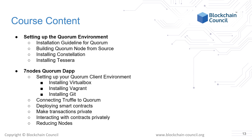Lastly, we will discuss a small project on seven nodes. In this, we will gain knowledge about setting up the Quorum client environment by installing VirtualBox, Vagrant, and Git. This will also include connecting Truffle to Quorum, deploying smart contracts, and performing a private transaction along with private contract interaction.